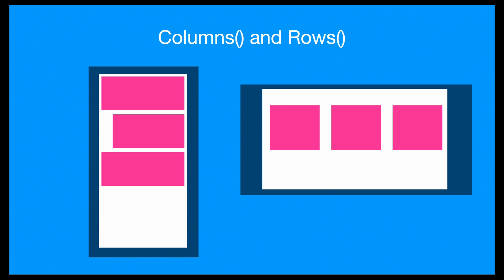The easiest way to do this is using columns and rows, so that we can lay out our widgets in a vertical direction or a horizontal direction and determine how they should be sized. And don't worry — we promise no actual columns or rows will be harmed in the making of this video.